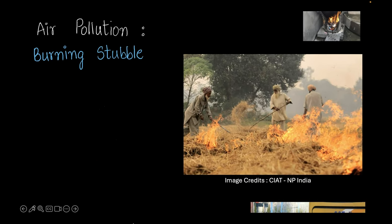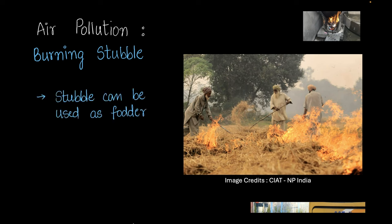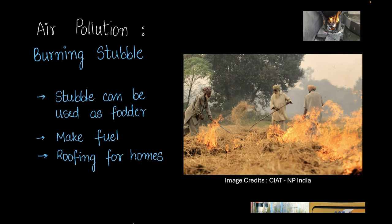Farmers burning stubble is another source of pollution. While it may seem like a quick way to get rid of stubble, it's harmful to the farm and to those nearby. Stubble could instead be used as fodder for animals, to make biofuels, manure, or biogas, or even as roofing material for homes and cattle sheds.